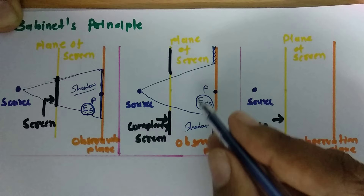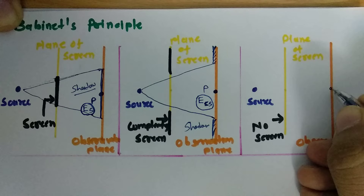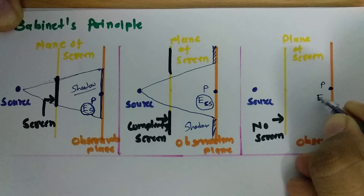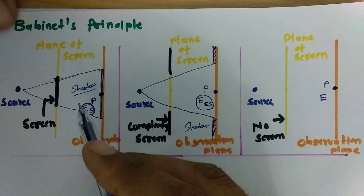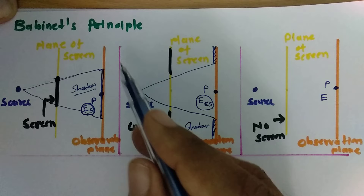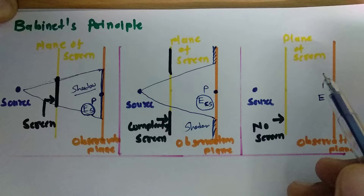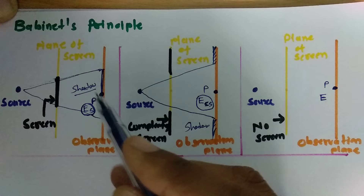And in the case of no screen, the energy received at observation point P will be E. So ultimately, as per Babinet's principle, we measure energy with a screen, with a complementary screen, and with no screen. Energy received for screen placed is ES at observation point P, it is ECS for the complementary screen, and without any screen it is E.